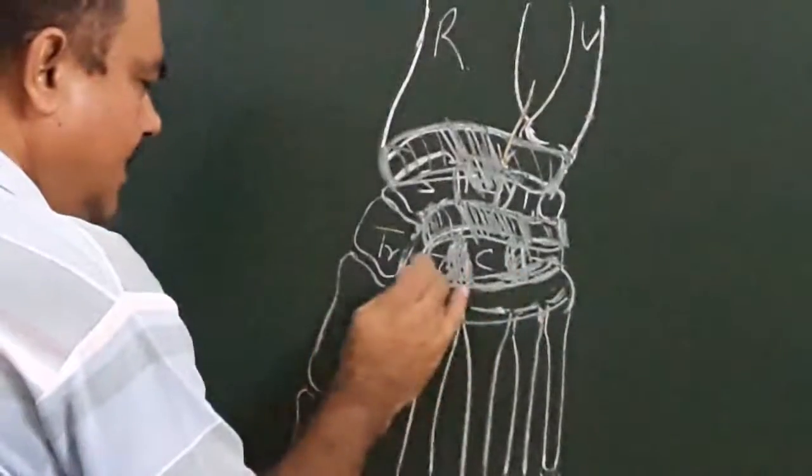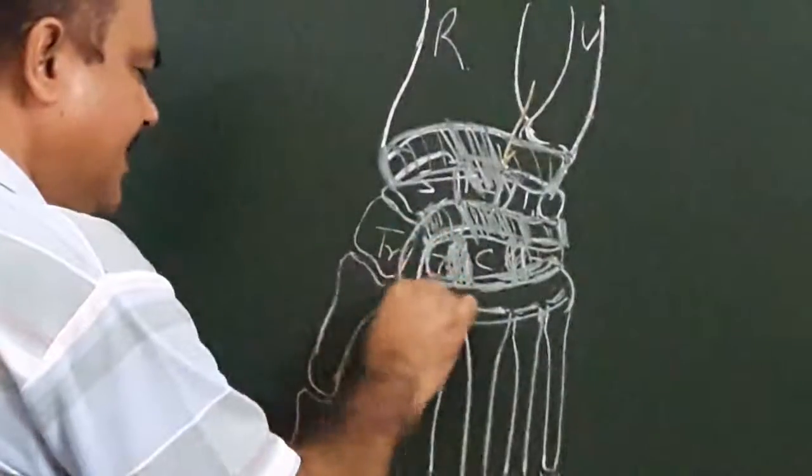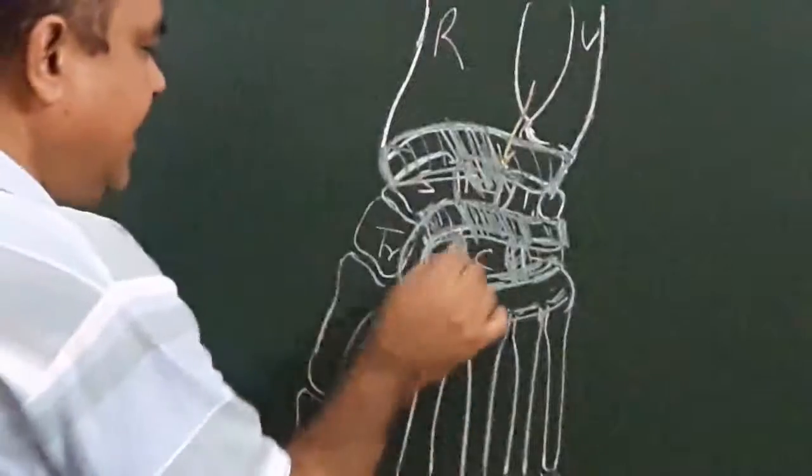The capsule laterally communicates with this midcarpal joint space.